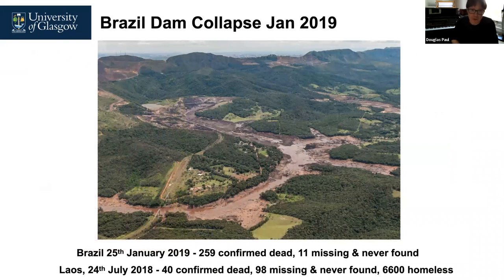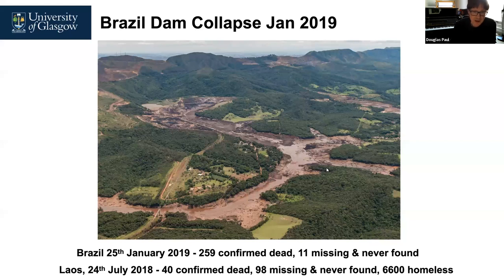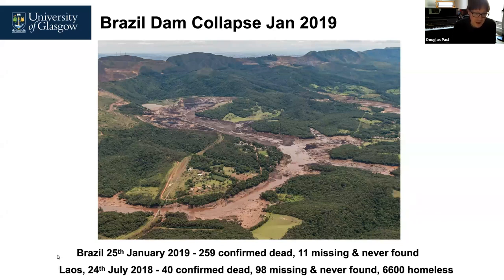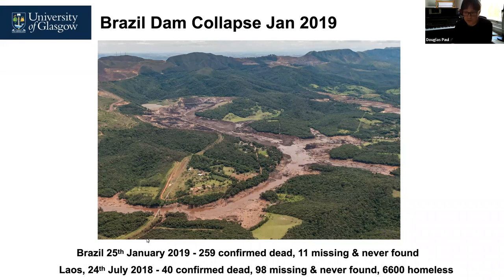Dams present other risks too. Two years ago in Brazil, a dam that was incorrectly built and maintained collapsed, killing 259 people — and 11 were never found. There was also a dam accident in Laos in July 2018. So while hydro schemes are renewable, if dams are not maintained and looked after, they can be dangerous and lead to fatalities.